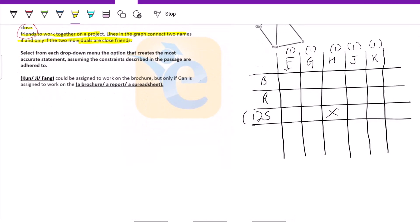Now we need to make a proper strategy. The question asks: select from each drop down menu that creates the most accurate statement. One of these three could be assigned to work on the brochure if and only if G is assigned to work on brochure, report, or spreadsheet. My strategy would be: I'll take K first, put all the conditions on K, then move ahead and put G, put all the conditions in place. Then I would see G with respect to brochure, report, and spreadsheet.